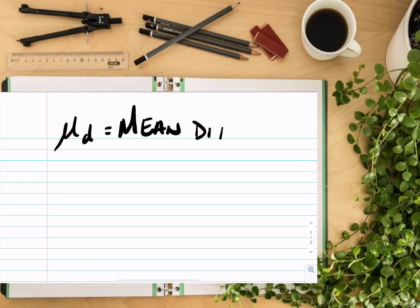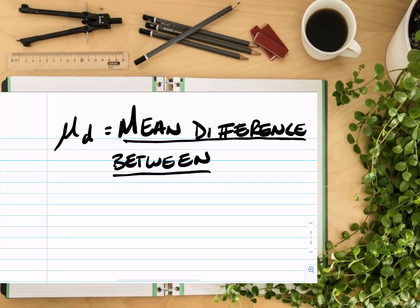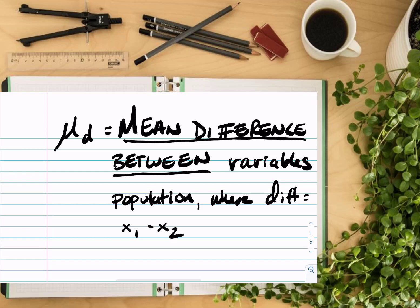So then when we define our parameter of interest, we have mu sub d equals mean difference between, and it will always be that phrasing at the beginning. So you can just memorize that that's how you start it. And then you would state your two variables that you have. So mean difference between, and then the variables and the population. So very similar to how we defined a mu in the past, it's just now we are going to be adding in a second variable, and also how the differences are calculated.